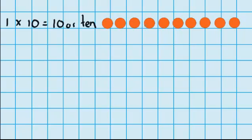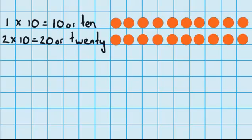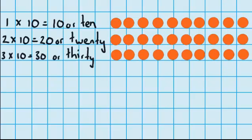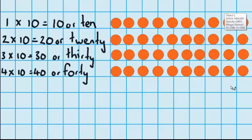Here I've got one row of 10 counters, or one group of 10 which is equal to 10. Now you can see I've got 2 groups of 10 or 20 counters. And now I've got 3 groups of 10 or 30 counters. And now you can see I've got 4 groups of 10 or 40 counters.